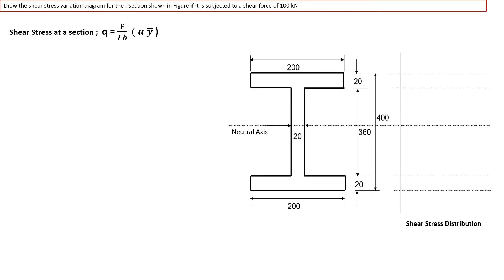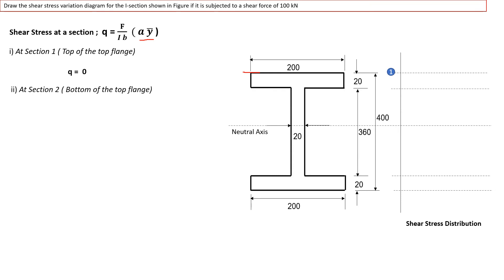We calculate the shear stress at Section 1, which is at the top of the top flange. At this level, there is no area above the section, so Aȳ = 0. Therefore, the shear stress at the top of the flange is zero.